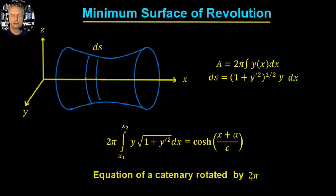This is the shape of the curve which when rotated around 2π will give us a minimum surface area. So not much in this video, it's really just the catenary video with a factor of 2π for a rotation.